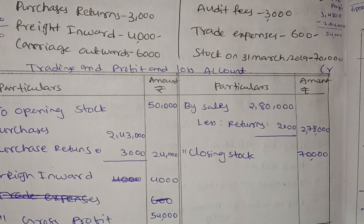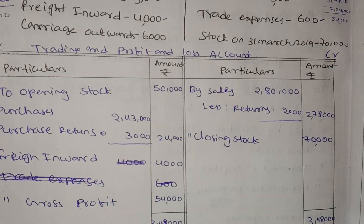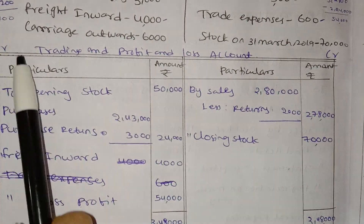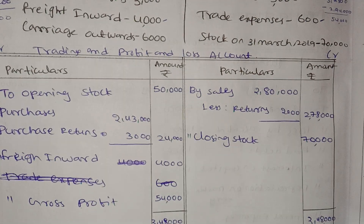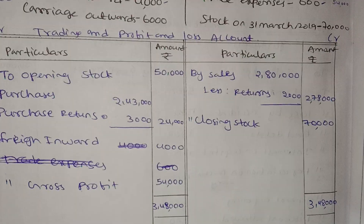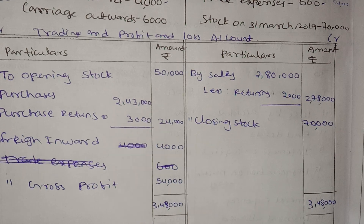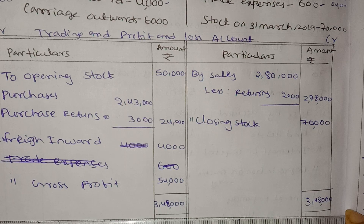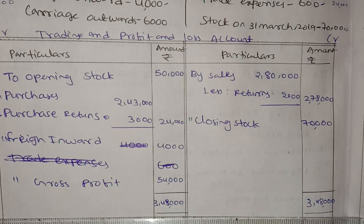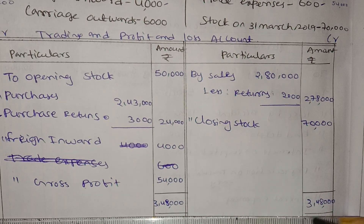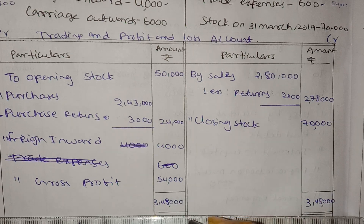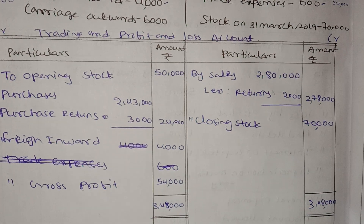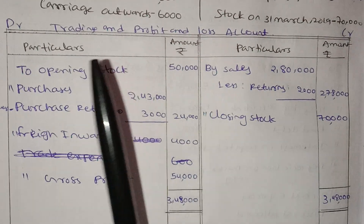Now we have particulars here. We have MGR. Here we have the debit side and credit side with double lines in the middle. We have the T-account format drawn with double lines.